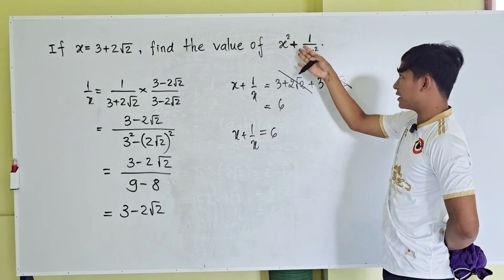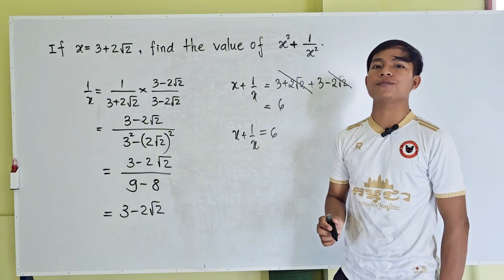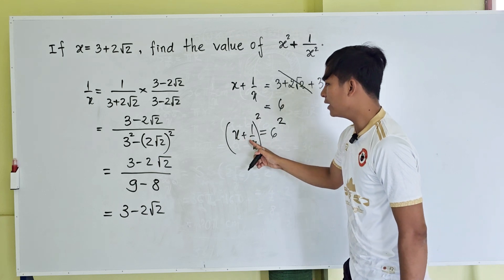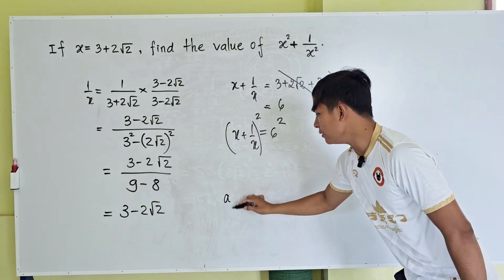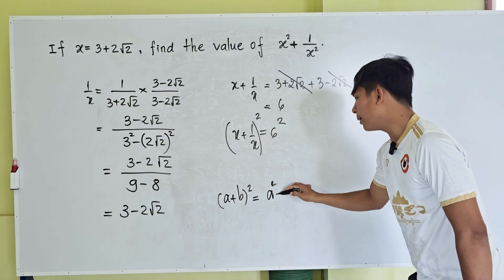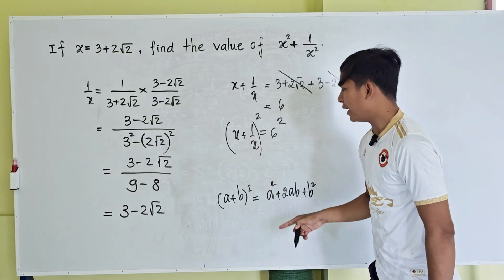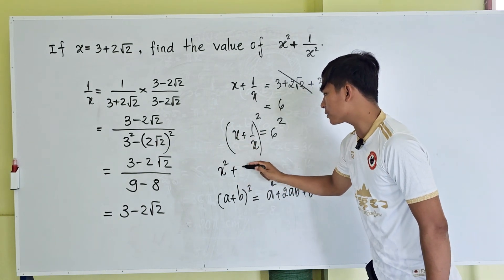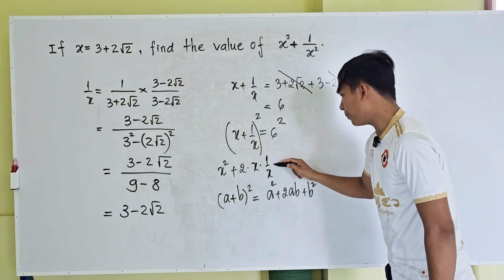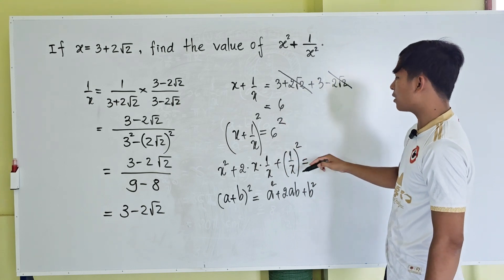We want to find x squared plus 1 divided by x squared, so we raise both sides of the equation to the square. We use the formula (a plus b) squared equals a squared plus 2ab plus b squared. Here a equals x and b equals 1 divided by x, so we get x squared plus 2 times x times 1 divided by x plus 1 divided by x squared equals 6 squared equals 36.